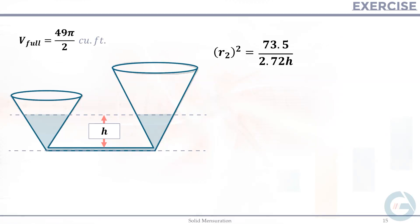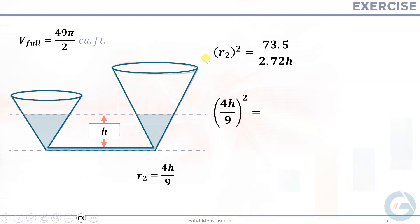To find H, we use the second tank's relation R₂ = 4H/9, derived from H = (9/4)R₂. Substituting this expression for R₂ into the equation R₂² = 73.5/(2.72H): (4H/9)² = 73.5/(2.72H), which gives 16H²/81 = 73.5/(2.72H).